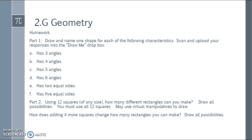Homework. Part one: Draw one shape for each of the following characteristics. Scan and upload your responses into the Draw Me dropbox. Part two: Using 12 squares of any size, how many different rectangles can you make? Draw all the possibilities, and you must use all 12 squares. You may use virtual manipulatives to draw, and I give you a link of a good one in the dropbox area. How does adding four more squares to the 12 we already have change how many rectangles you can make? Draw all those possibilities as well. So you'll have three things that are part of this one homework assignment, and then scan and upload them to the Draw Me dropbox. Next week we start grade three.